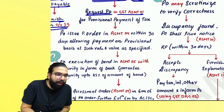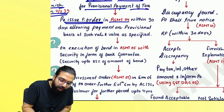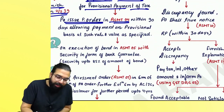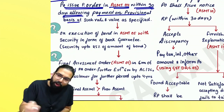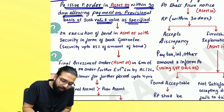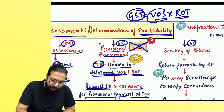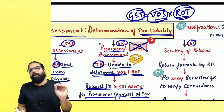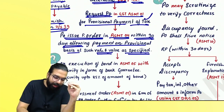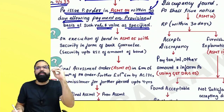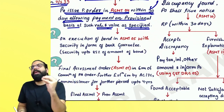In ASMT-01, you will request the officer for provisional payment of tax. The officer will go ahead and issue an order in ASMT-04 within 90 days, allowing for provisional payment on a provisional basis at such rate and value as may be specified in the provisional assessment order. I was not able to determine the value or the rate of tax, so I applied to the officer in ASMT-01, and he will issue me an assessment order in ASMT-04 within 90 days.